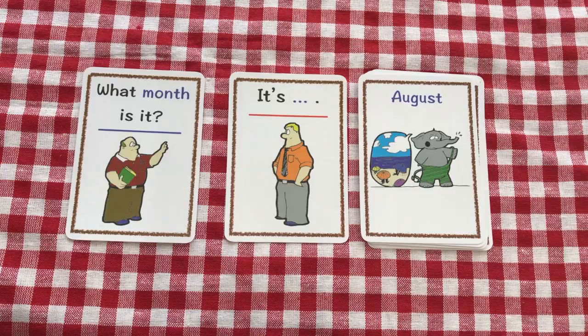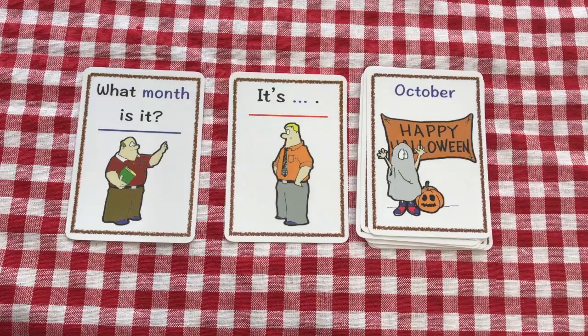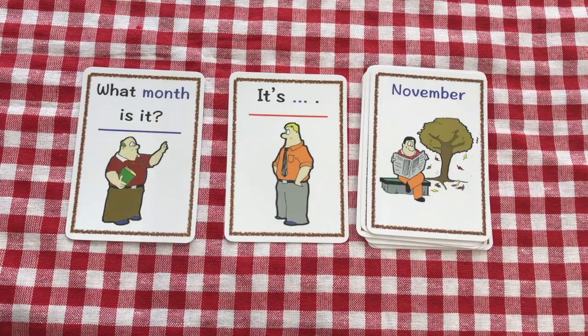What month is it? It's August. What month is it? It's September. What month is it? It's October. What month is it? It's November. What month is it? It's December.